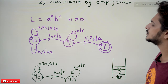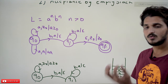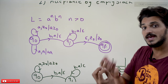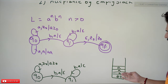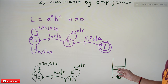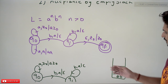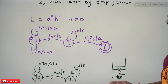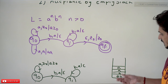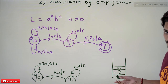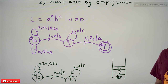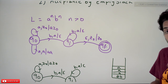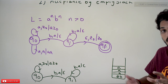a^n b^n means equal number of a's followed by equal number of b's. Whenever you see an 'a', push it onto the stack. Whenever you see a 'b', pop an 'a' from the stack. If there are equal numbers of a's and b's, the stack will be empty — this is how the given string is accepted.